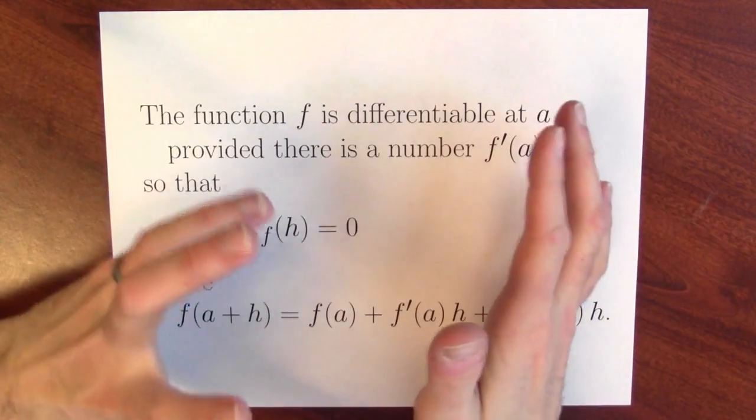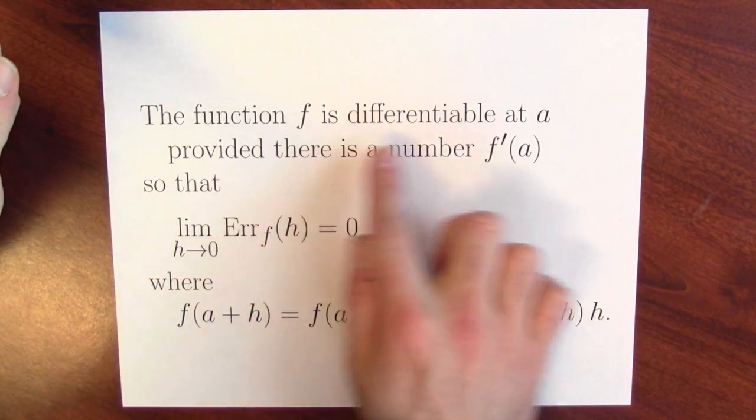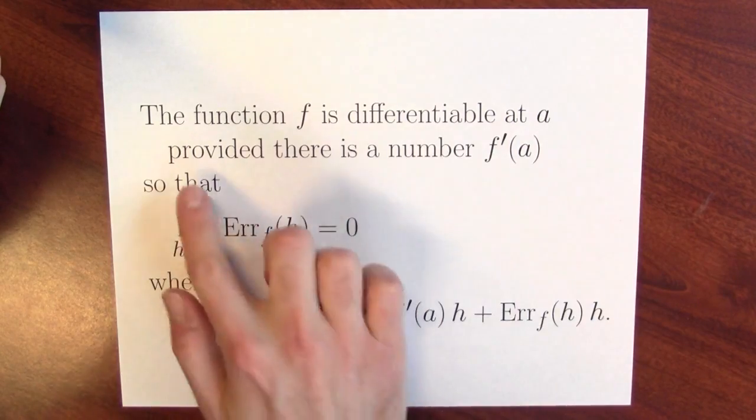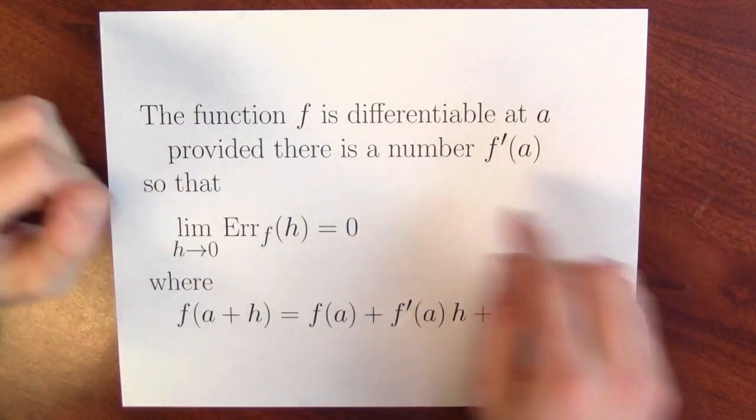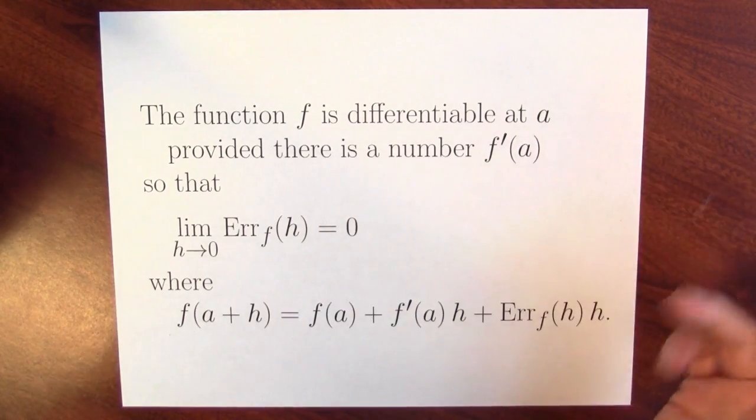One way to go is to give a slightly different definition of derivative. Well, here's a slightly different way of packaging up the derivative. The function f is differentiable at a point a, provided there's some number, which I'm suggestively calling f prime of a. It's the derivative of f at a.